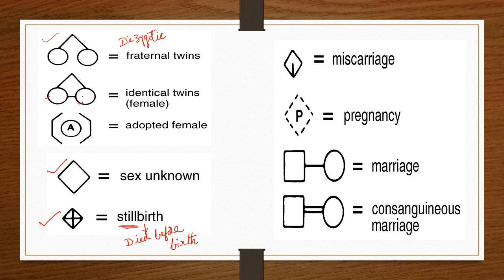The sex-unknown symbol with a line indicates miscarriage, also called ectopic pregnancy — where implantation occurs outside the uterus instead of in the uterus. In some books this is also represented with a triangle.